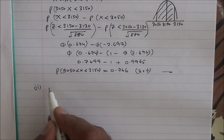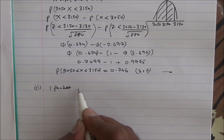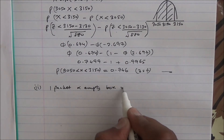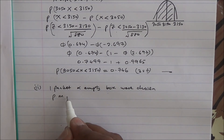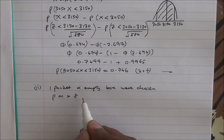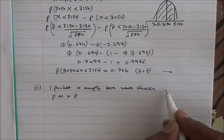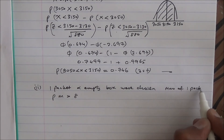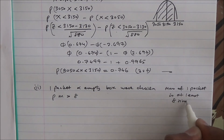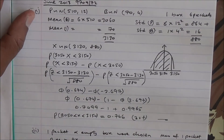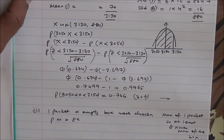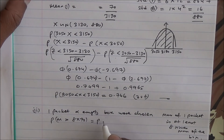For the second part of the question, a packet and an empty box are chosen, and we have to find the probability that the mass of the packet is at least eight times the mass of the box. Eight times the mean mass of the box is 8 times 70, so we need to find the probability that the mass is greater than 560 grams.